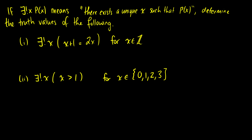Here we're going to introduce the unique existential quantifier. So if there exists a unique x such that p of x — this exclamation mark means unique — this means that there is exactly one x such that p(x). We need to determine the following truth values. The first one says: there exists a unique x such that x plus 1 equals 2x, for x in the integers.